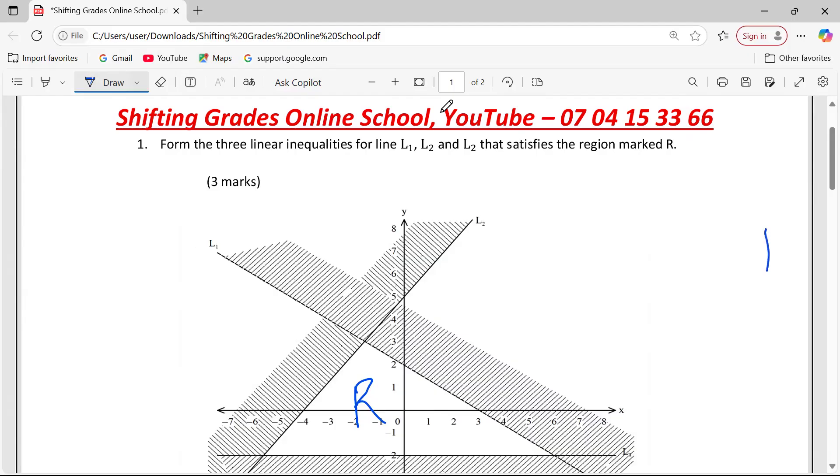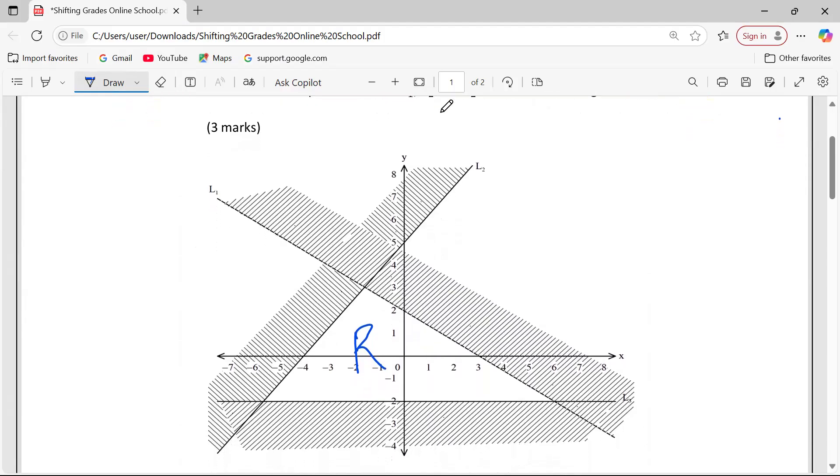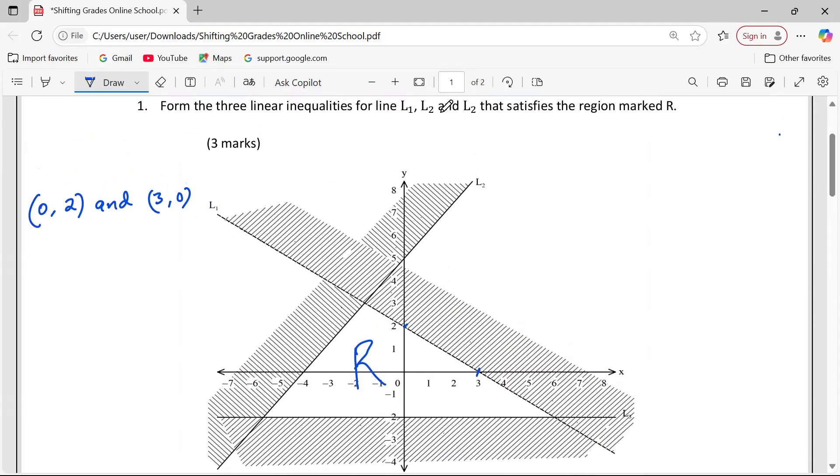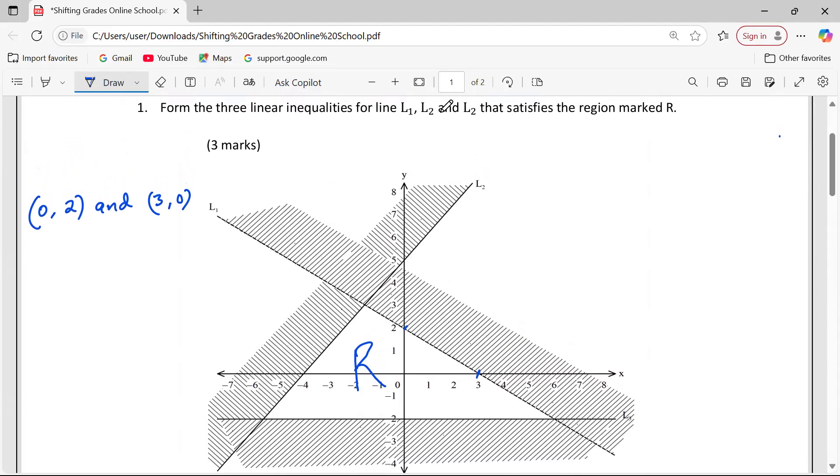We begin with L1. We're going to extract some two coordinates that lie on L1, and we can pick the intercepts. For example, this one. So on the Y-intercept, we have the coordinate (0, 2). Then at the X-intercept, we are having (3, 0). So with the two coordinates, gradient can be obtained.